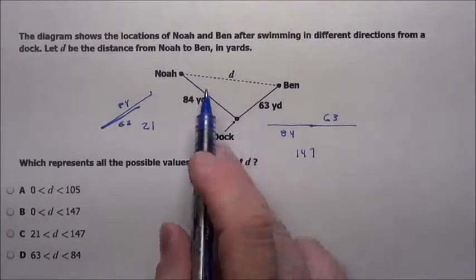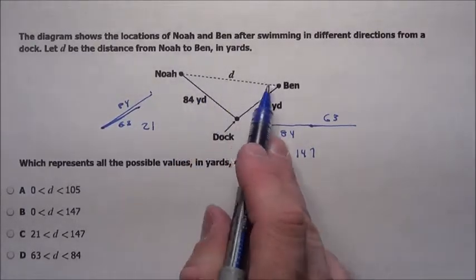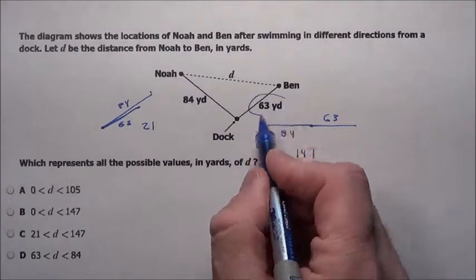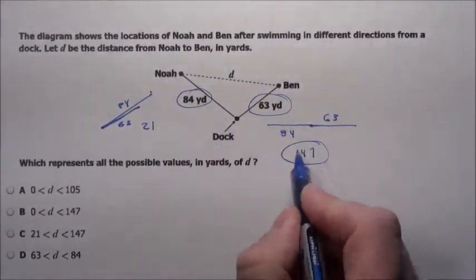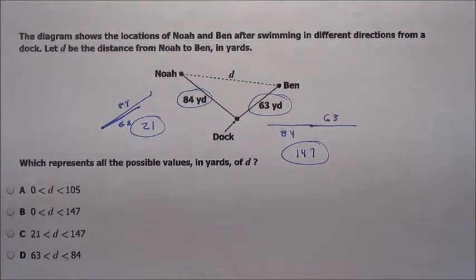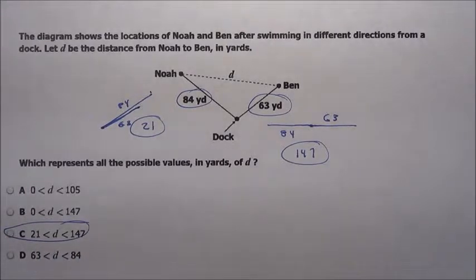If you remember to do problems like this — if we want that third side length, it's a triangle inequality problem. All we do is simply add these two lengths to get the most: 147, and subtract them to get the least. Our answer has to be somewhere between 21 and 147. Choice C — for problem 23, the answer is C.